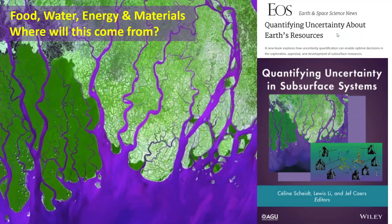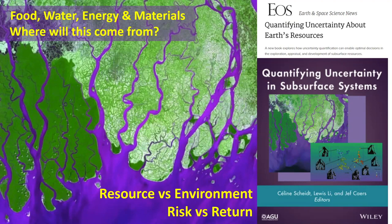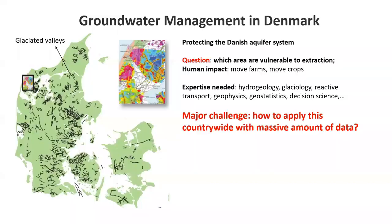The challenge we're all having is: food, water, energy, materials — where will it all come from? In the appraisal and exploitation of such resources, there's always a question of risk versus return, which is the resource versus the environment. The exploitation of groundwater, for example, is a case where extraction may damage the environment due to contaminants entering the groundwater system.